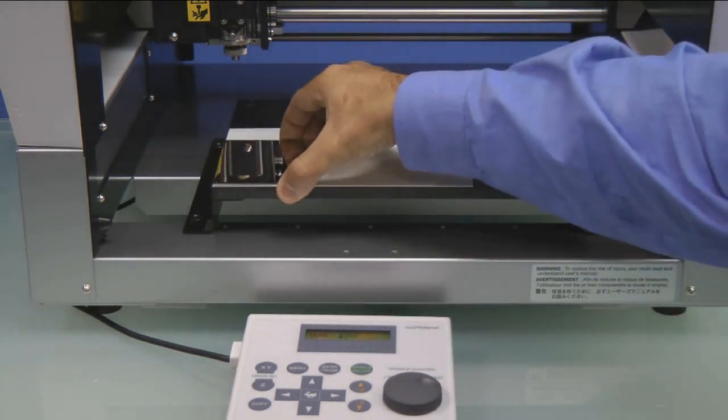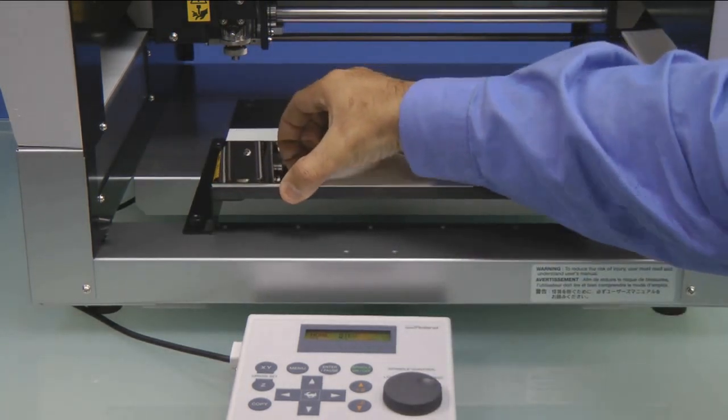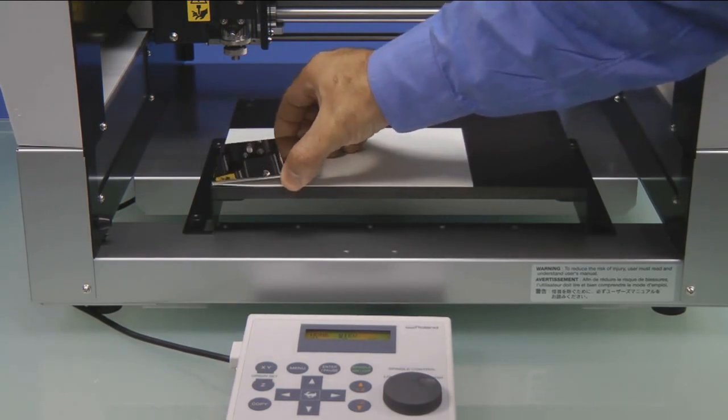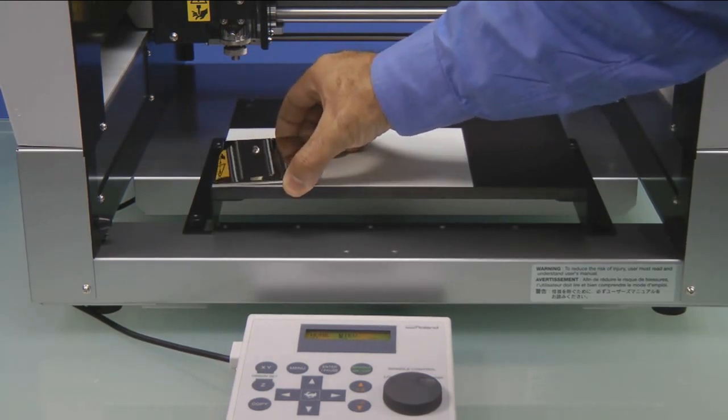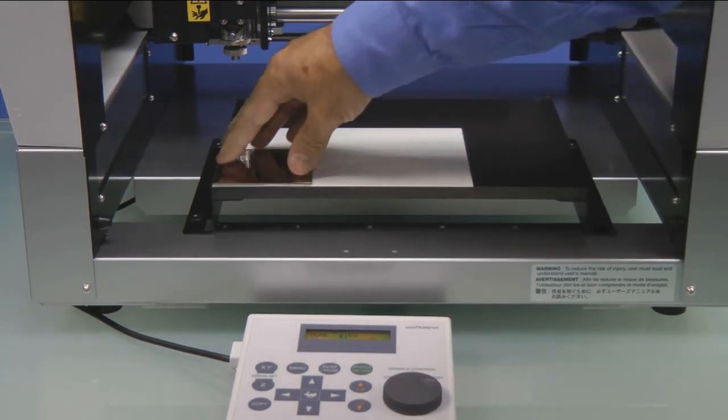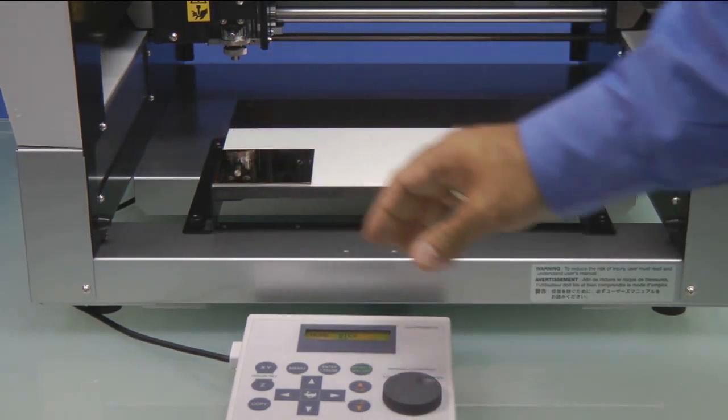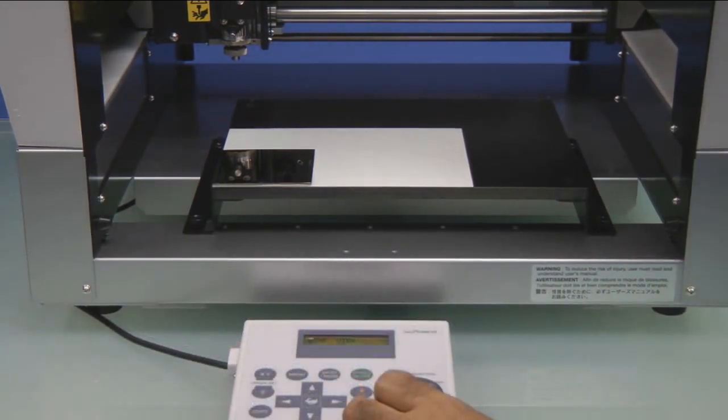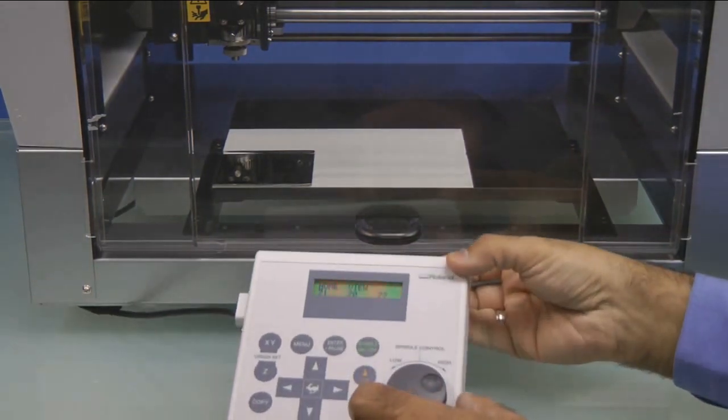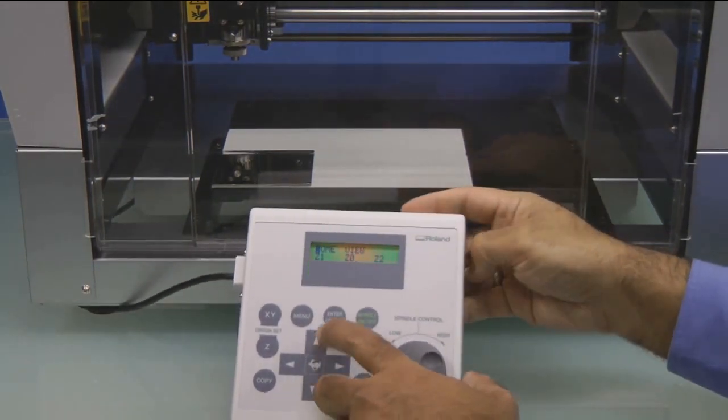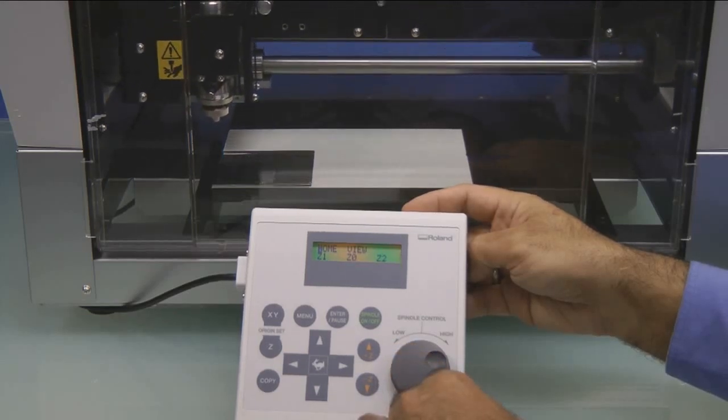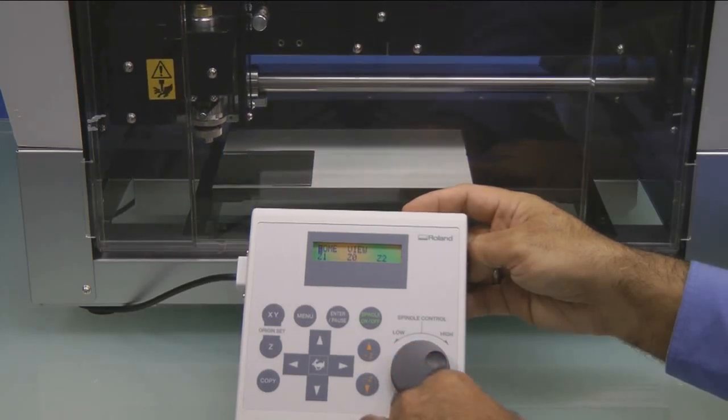Next, place the metal plate to the lower left corner of the engraving table on top of the AS10 sheet. At this point, close the cover, move the cursor to the Home position, and press Enter. The spindle will move to the lower left corner of the machine.